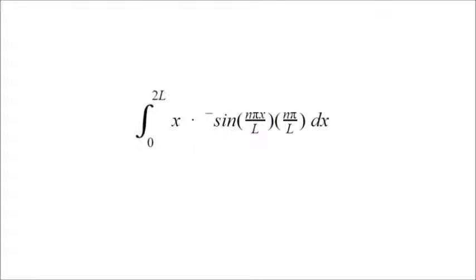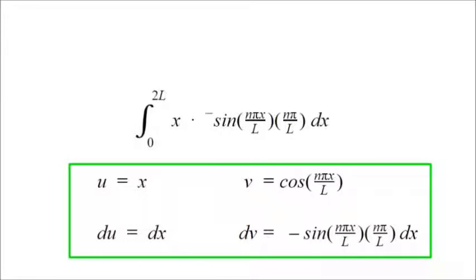The integral from 0 to 2L of x times cosine of n pi x over L. And then there's that convenient term afterwards. So can you integrate that? Well, not in one step. That's why we need integration by parts. Let us define u as x.